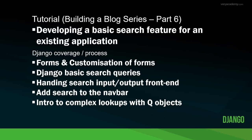Hello and welcome back to another tutorial. This is part six of building a blog series, where we will be developing a basic search feature for an existing application. Although we're building a blog here, you can apply this code within your own application. In this tutorial, I cover form and form customization, Django basic search queries, handling of search input and output, building a template, adding search to the nav bar, and an introduction to complex lookups using Q objects.